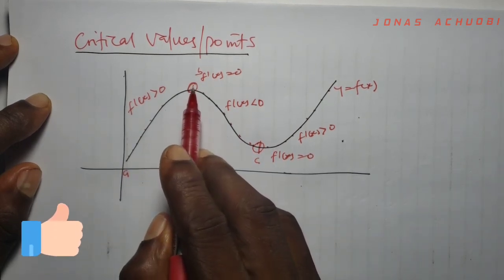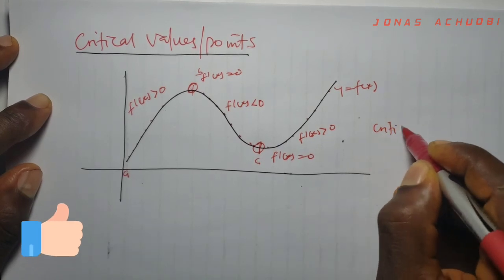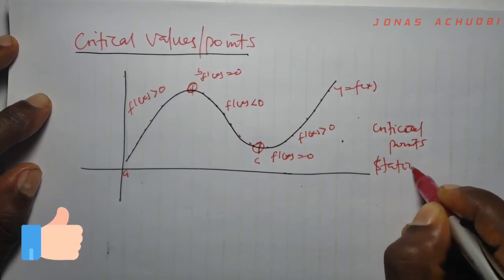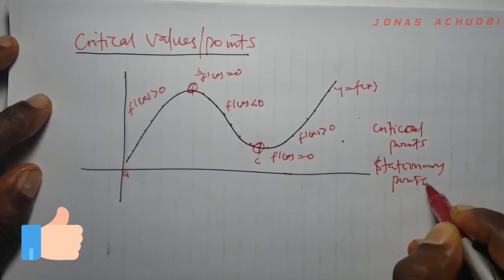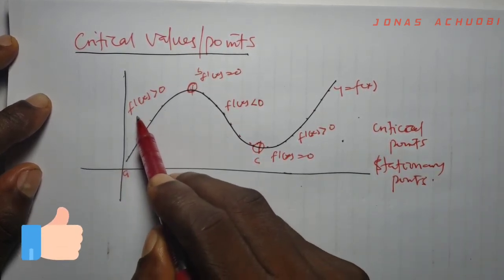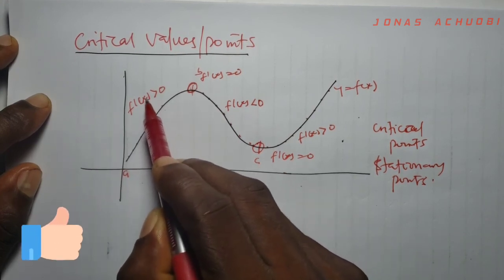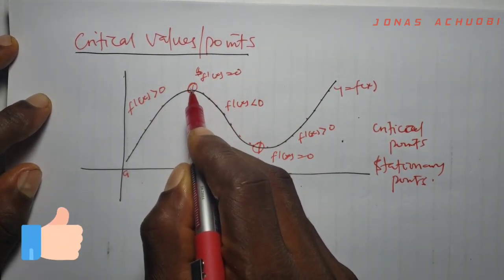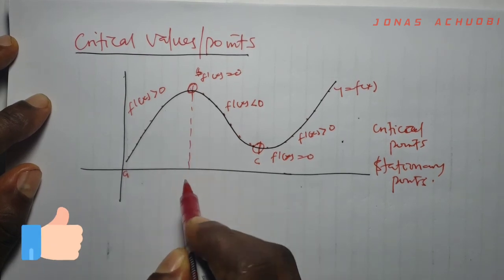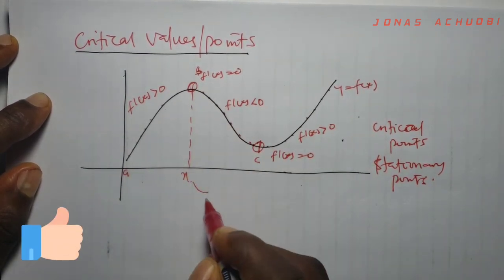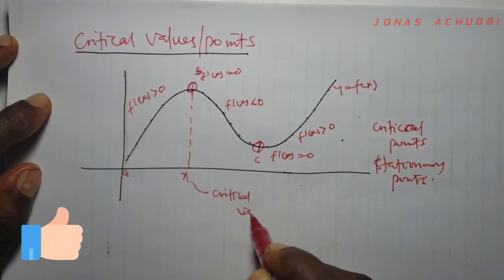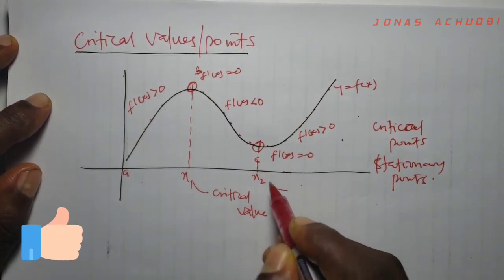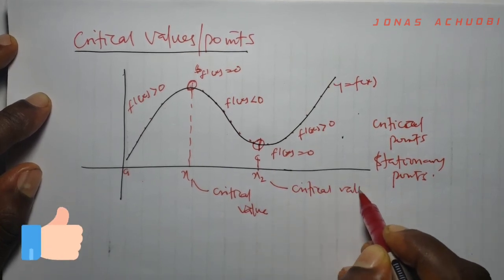These points b and c are called critical points, also known as stationary points. Critical points are points where the slope of a curve changes from positive to negative or from negative to positive. The x-value where a critical point occurs is called a critical value. So point b is a critical point and its corresponding x-value is a critical value; similarly, point c is a critical point and its x-value is also a critical value.